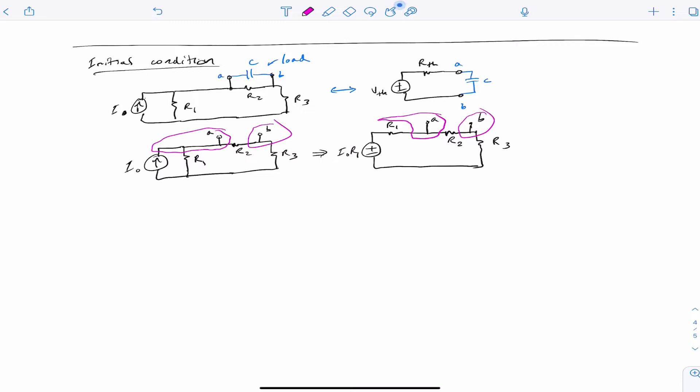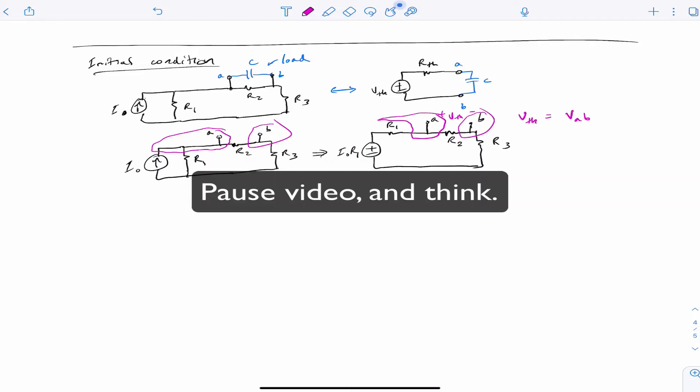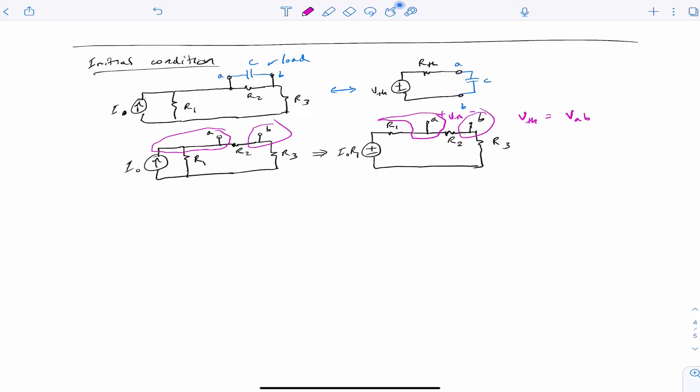Now it's easy to find the V Thevenin, so we'll put here V Thevenin is VAB. Take a moment, pause the video, and ask yourself, how do you find VAB from this circuit? If you thought about it and you recognize that voltage divider would be a nice way to go, you're correct.